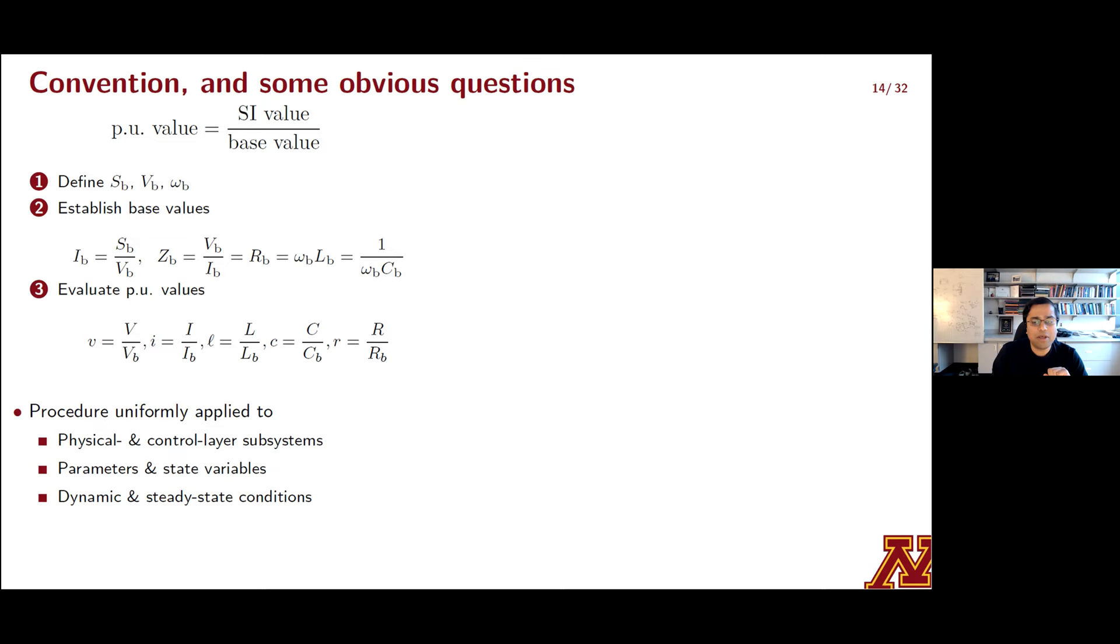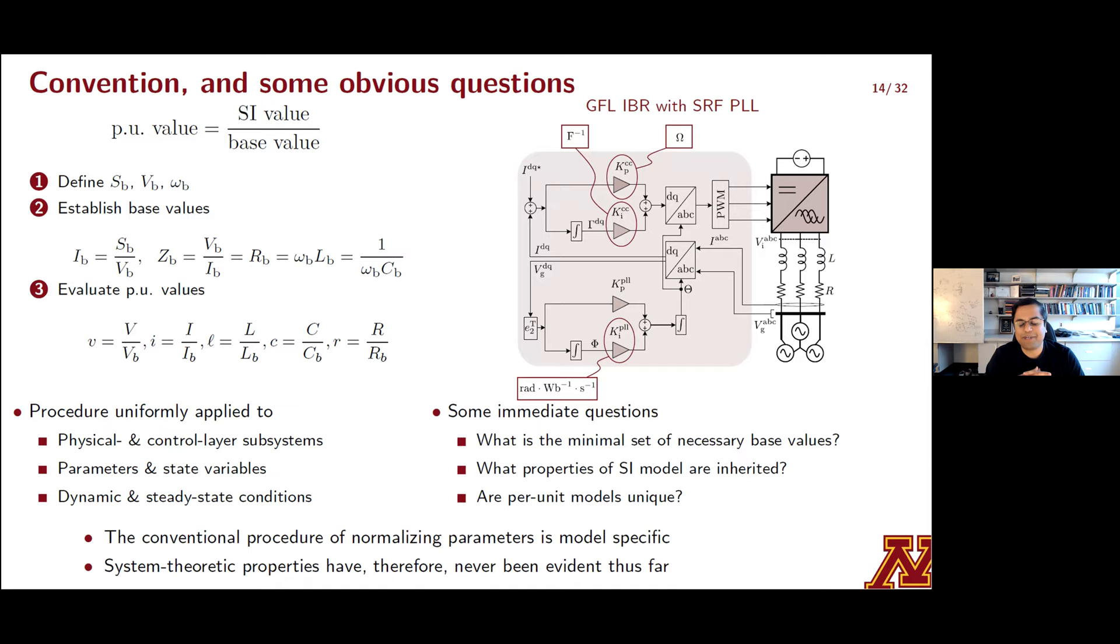So what is the problem? The problem arises when you start looking a little bit into power converters, and you try to apply this stepwise algorithmic procedure to that context. So let's take an example of a grid-following inverter model to illustrate this challenge. So this model that I'm showing you on the right includes a first-order L-filter. It's a simple PI-based current controller. And then there's also a synchronous reference frame phase-locked loop, or an SRF-PLL for short, which synchronizes it with the grid.